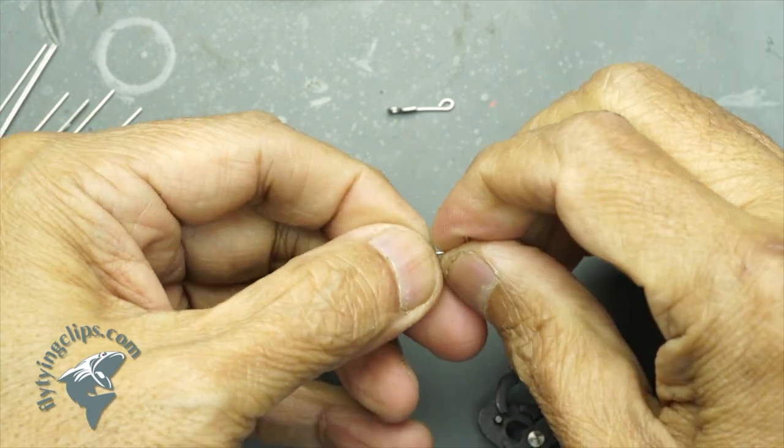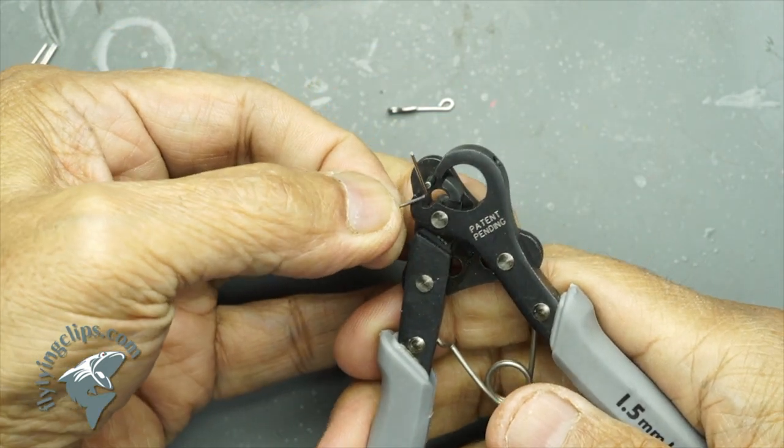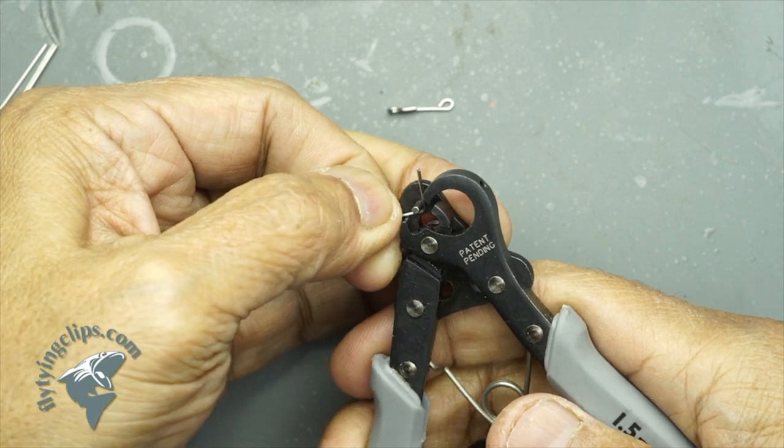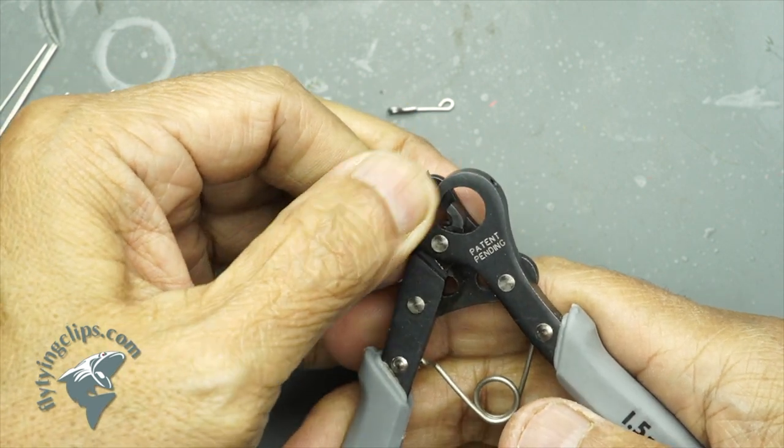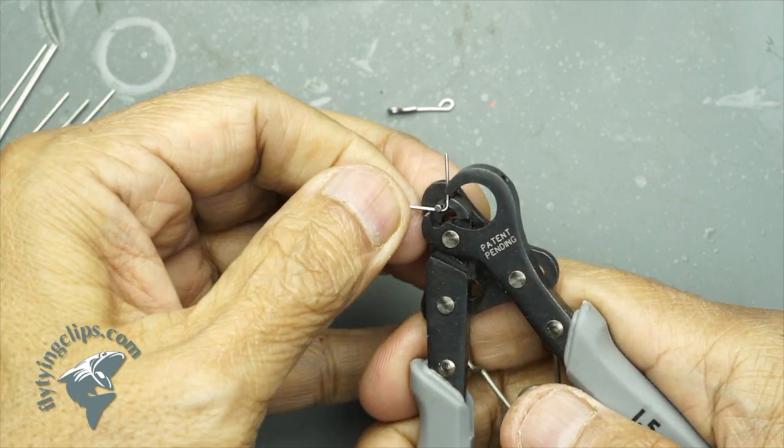See how that end sticking up is at 90 degrees and also 90 degrees from the other loop. Now you place it back in the jaws but you do not thread it through that hole. And what it does is it will create another loop, an R loop.